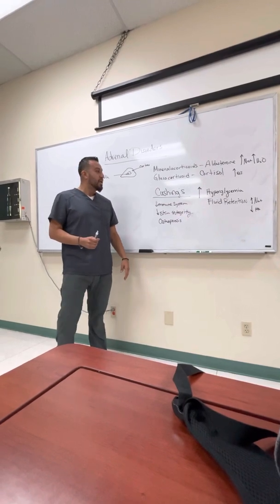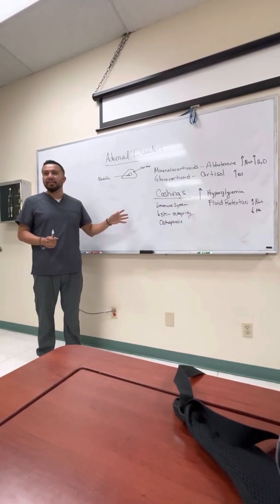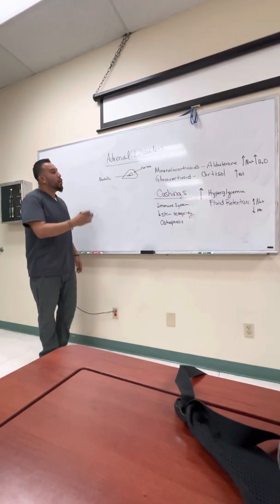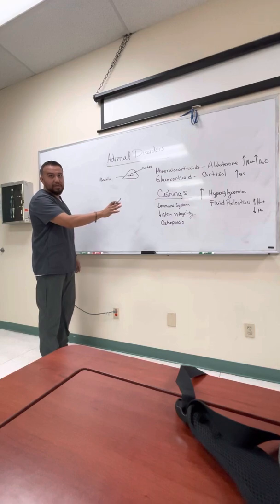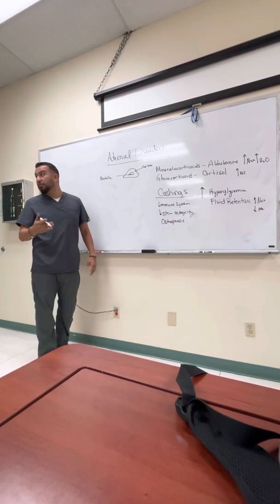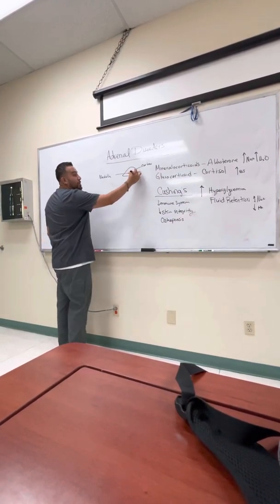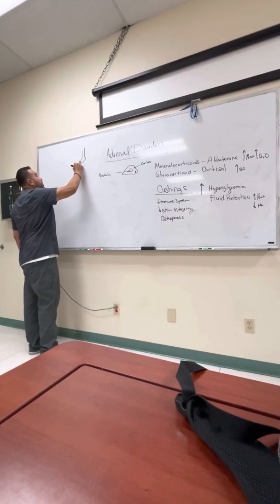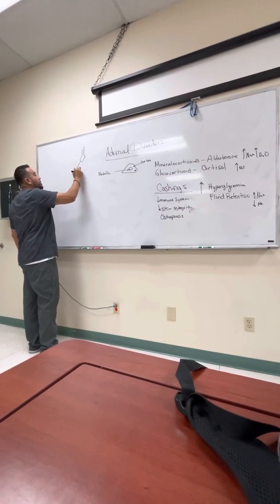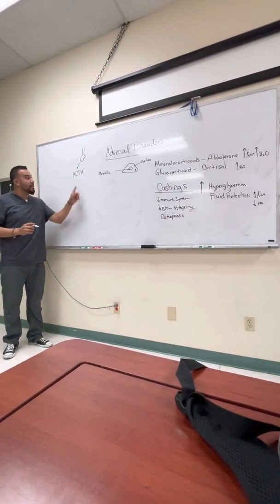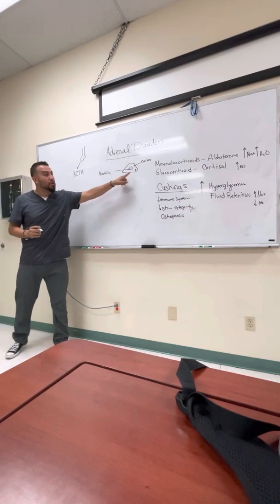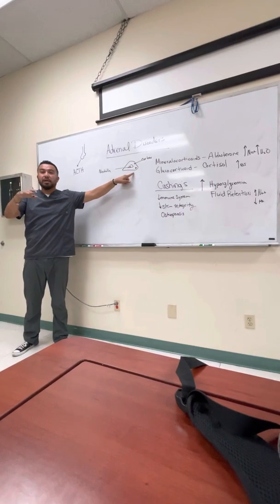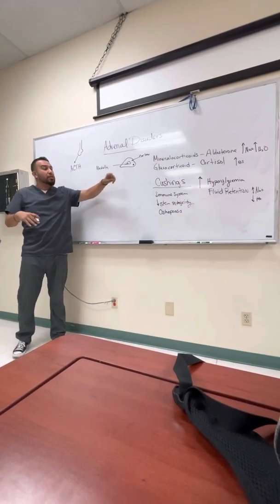People with Cushing's syndrome — you want to avoid giving them anything that contains sugar or salt, because that will exacerbate the issue. What we normally do is surgery to remove the tumor causing the problem. The tumor can be at the adrenal cortex or at the pituitary gland, where adrenocorticotropic hormone (ACTH) is released — this hormone tells the cortex to increase or decrease function, just like TSH does with T3 and T4.